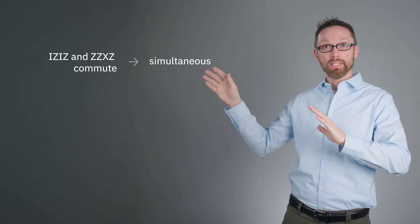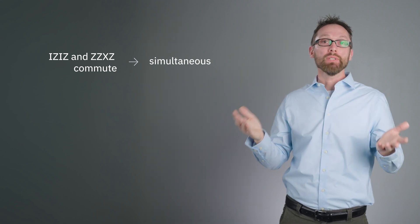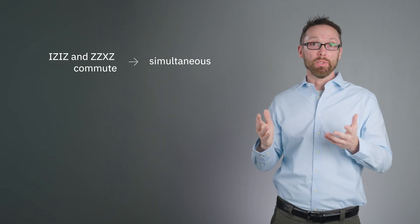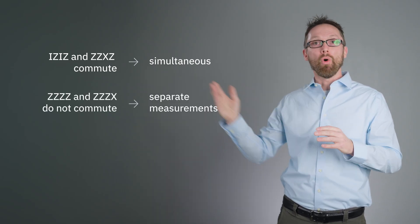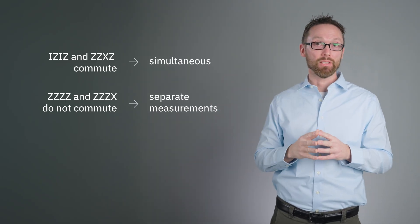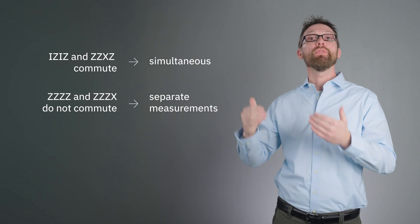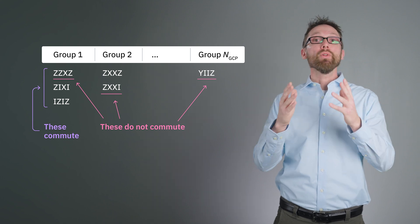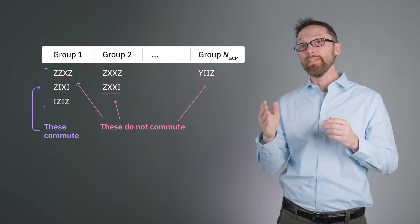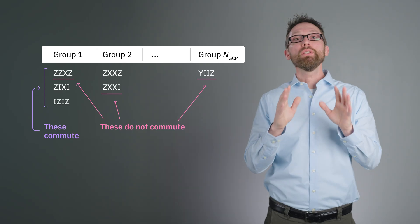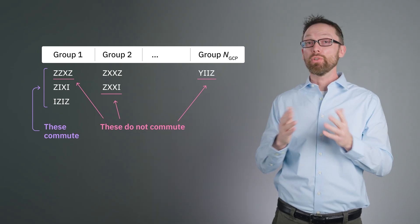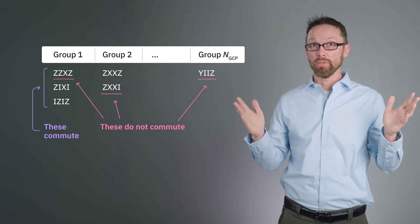For example, we can measure IZIZ and ZZXZ simultaneously because we can measure I and Z simultaneously for the third qubit. And we can know I and X simultaneously for the first qubit. But we cannot measure all Zs and ZZZX simultaneously because Z and X do not commute and both act on the zeroth qubit. So we decompose our matrix H into a sum of Paulis acting on different qubits. Some elements of that sum can be measured all at once. We call this a group of commuting Paulis. Depending on how many non-commuting terms there are, we may need many such groups. Call the number of such groups of commuting Pauli strings N_GCP. If N_GCP is small, this could work well. If H has millions of groups, this will not be useful.